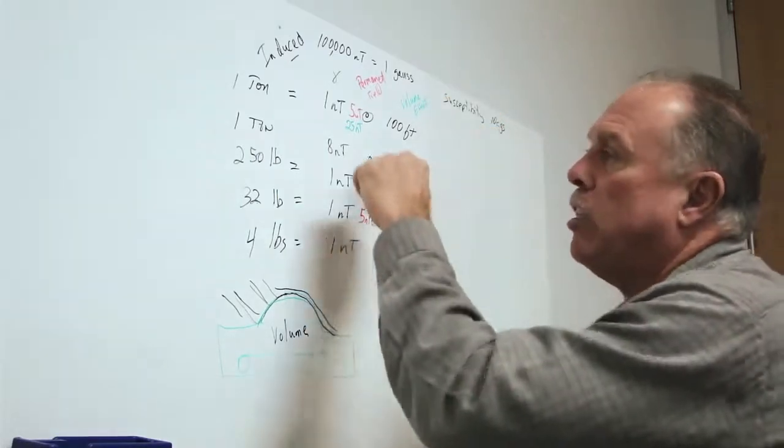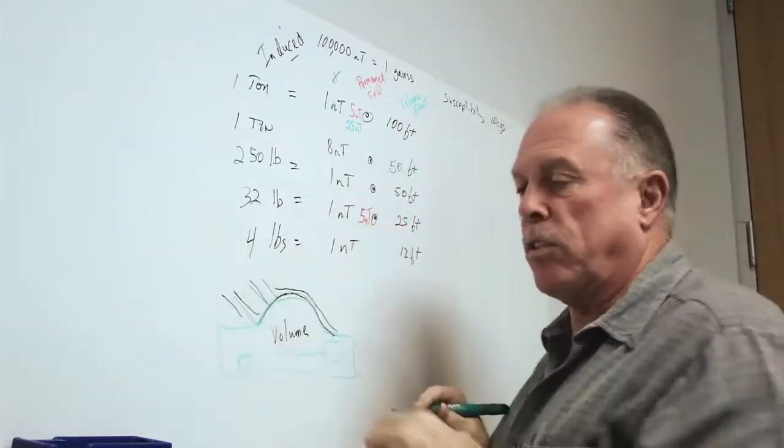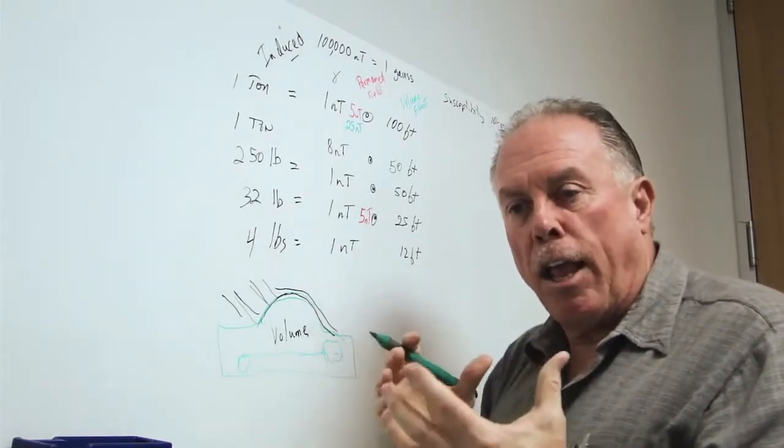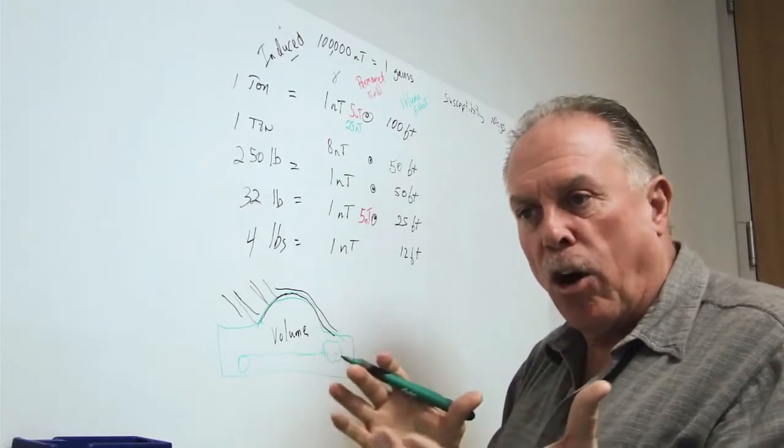So we see that even small items, if they're, for instance, like a shell, like an unexploded military shell, the interior is, there's a space inside for explosives.